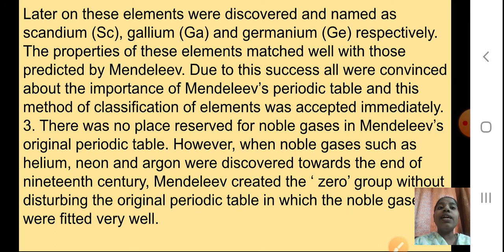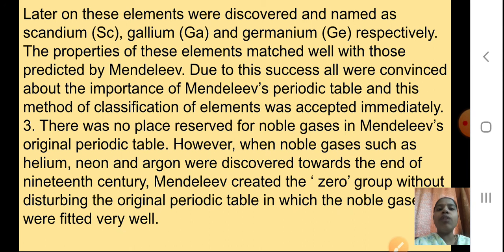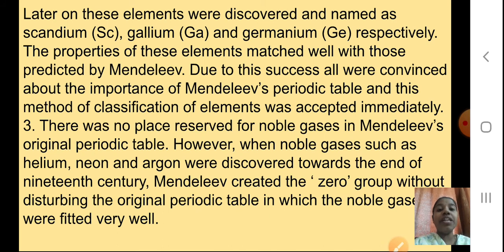There was no place reserved for the noble gases in Mendeleev's periodic table. However, when noble gases such as Helium, Neon, and Argon were discovered towards the end of the 19th century, Mendeleev created a zero group. He didn't reserve space for noble gases originally — noble gases are stable and do not take part in chemical reactions easily — but then he created a zero group without disturbing the original periodic table, in which the noble gases were also fitted very well.